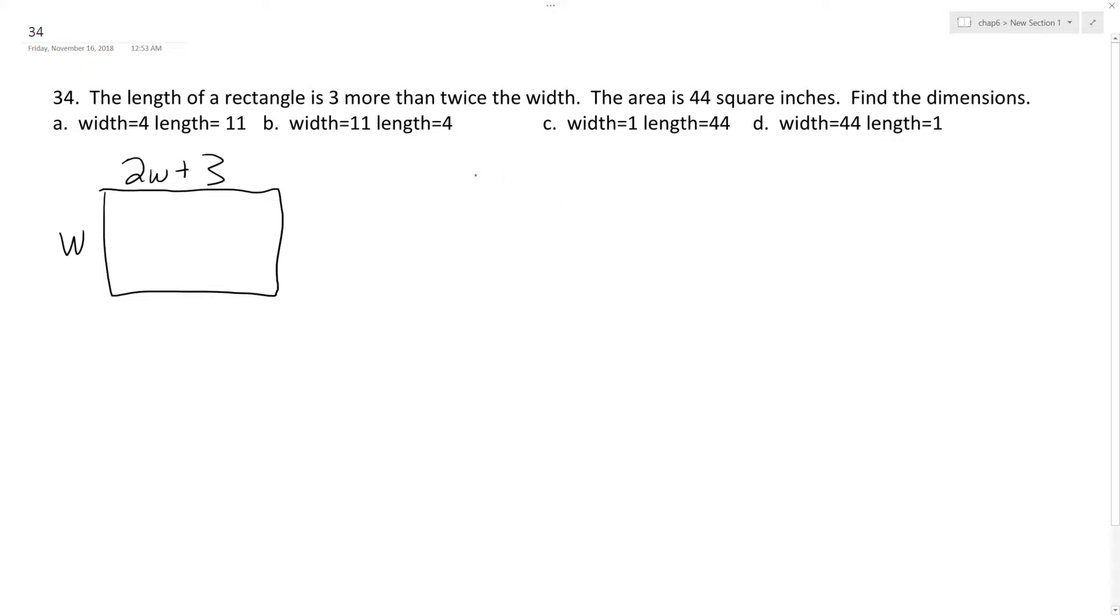The area is 44 inches, find the dimensions. All right, so length times width is equal to area, in this case 44 inches squared. So in this instance, L is going to be equal to 2W plus 3. So 2W plus 3 times W equals 44.